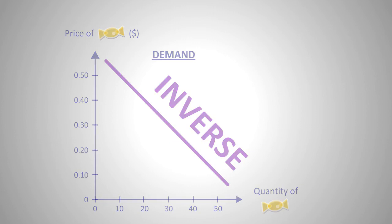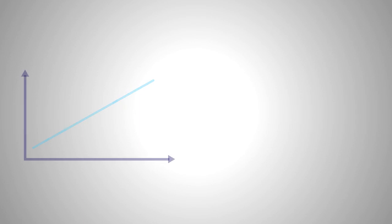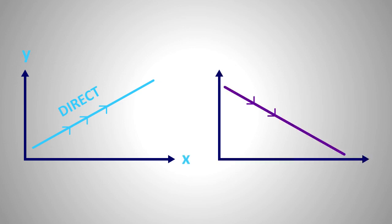To summarize, graphs are useful in economics because compared to tables, graphs show us the relationship between different things quickly. When the line slopes upwards, there is a direct relationship between x and y. When the line slopes downwards, there is an inverse relationship between x and y.